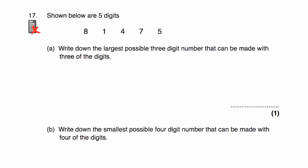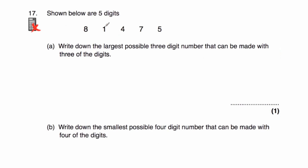Question number 17 — we've got five digits: 8, 1, 4, 7, and 5. We've been asked to write down the largest possible three-digit number that can be made from these digits. So we want to use the three largest digits: 8, 7, and 5. We put the largest digit in the hundreds, the second largest in the tens, and the third largest in the units. So the answer would be 875.